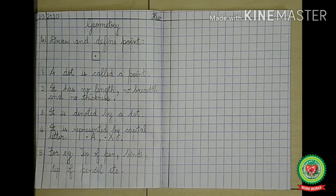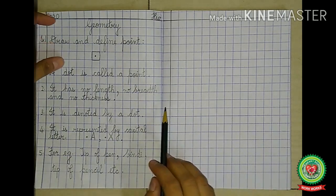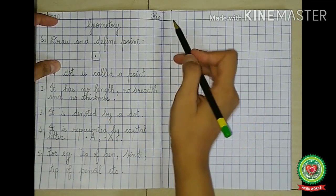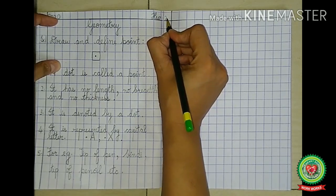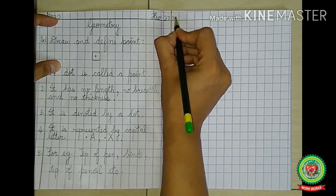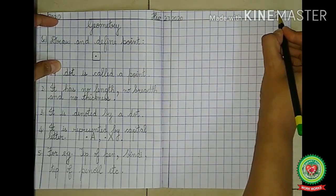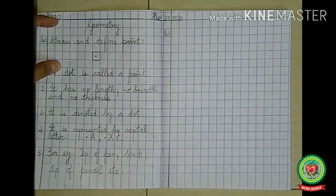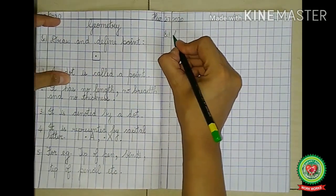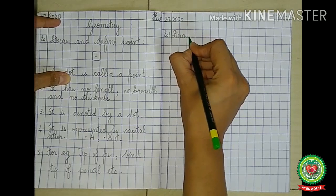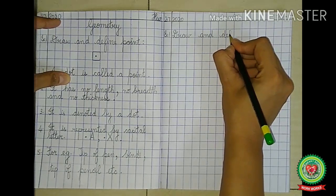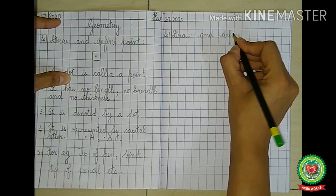Now let us see the copy approach of ray. Okay children, now we are going to start with ray. First of all, take a new page on your maths copy. Draw margins. Write down the date. Suppose date is 2nd July, you will write 2.7.2020. And on the right hand side, write down homework. Leave a line, put exercise 1. And you will write: draw and define ray.